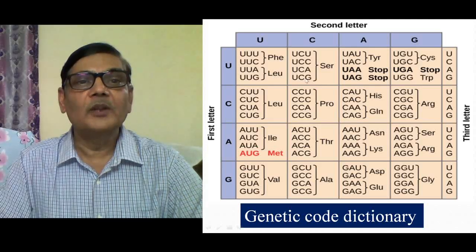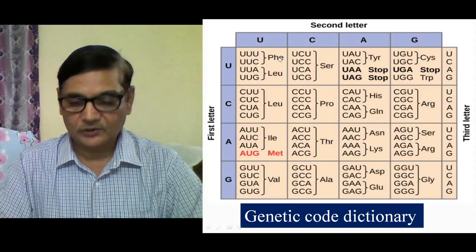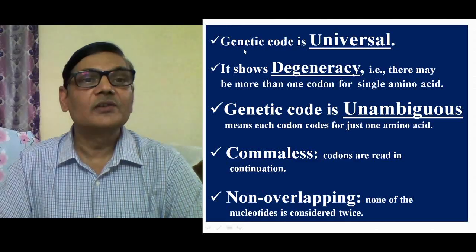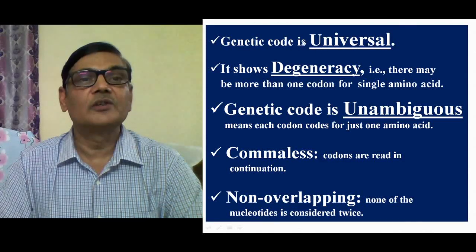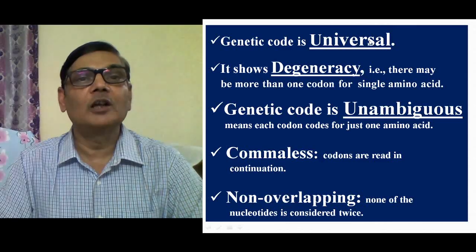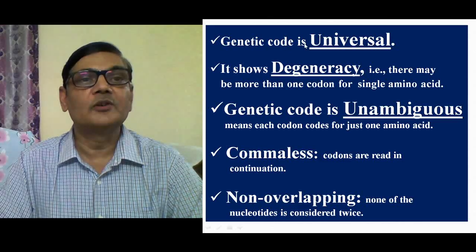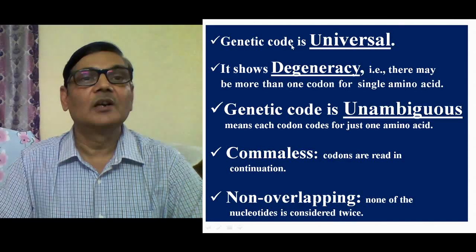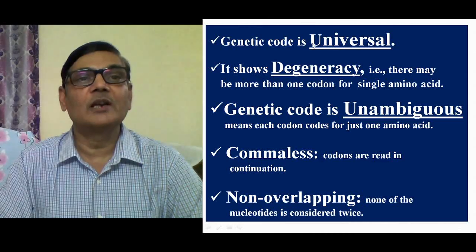By going through this table, we can understand which codon encodes which amino acid. Now there are certain characteristics of this genetic code dictionary. The first one is that the genetic code is universal — this codon system is applicable in all organisms, whether they are viruses, bacteria, eukaryotes, mitochondria, or chloroplasts. The same genetic code is applicable in all cases. It is universal, though I will talk about some exceptions.